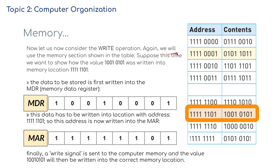Now the write operation. Suppose this time we want to show how a value was written to a memory location. This data has to be written into the location with the address 11111101, so this address is written into the MAR. Finally, a write signal is sent to the computer memory and the value will then be written into the correct memory location. All this is happening continuously and at lightning speeds whenever we're working on a task which involves the CPU, which really is everything when we're using our computer.